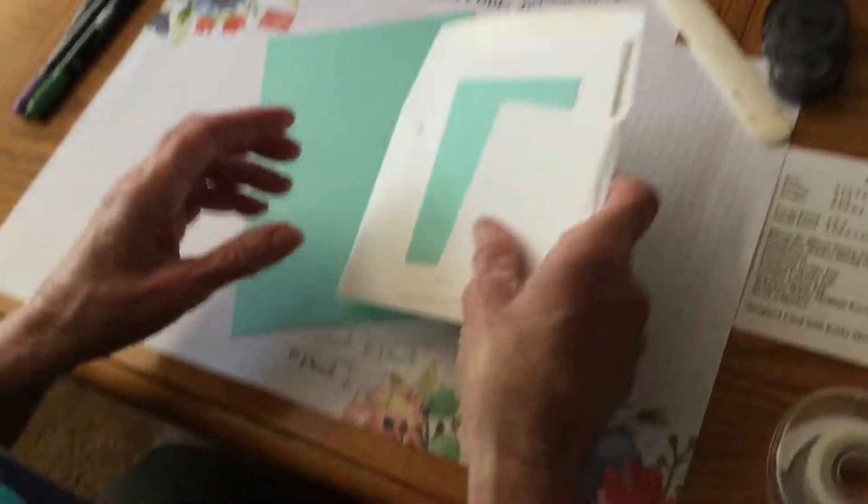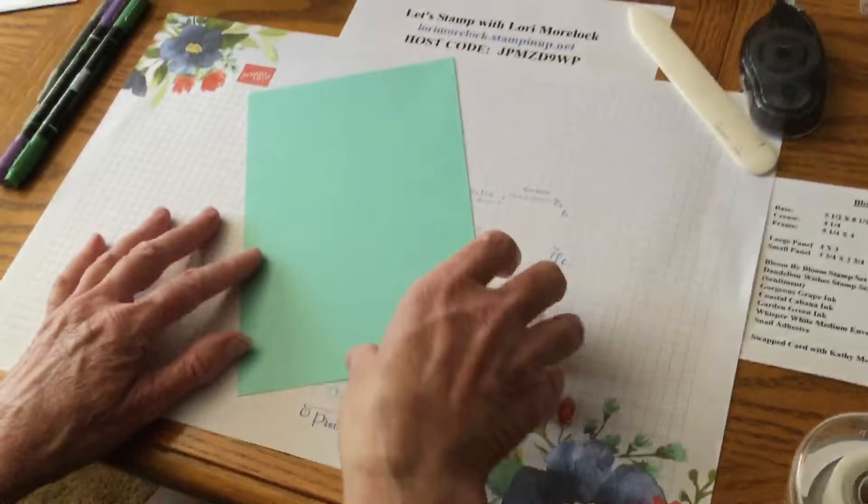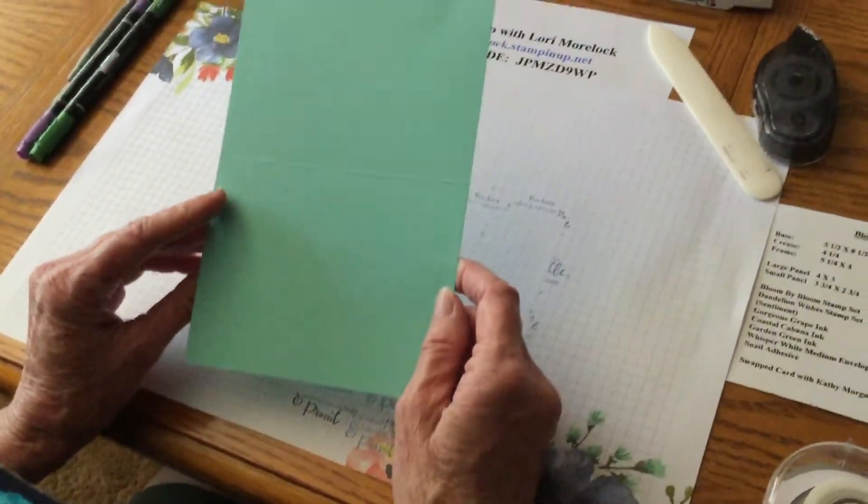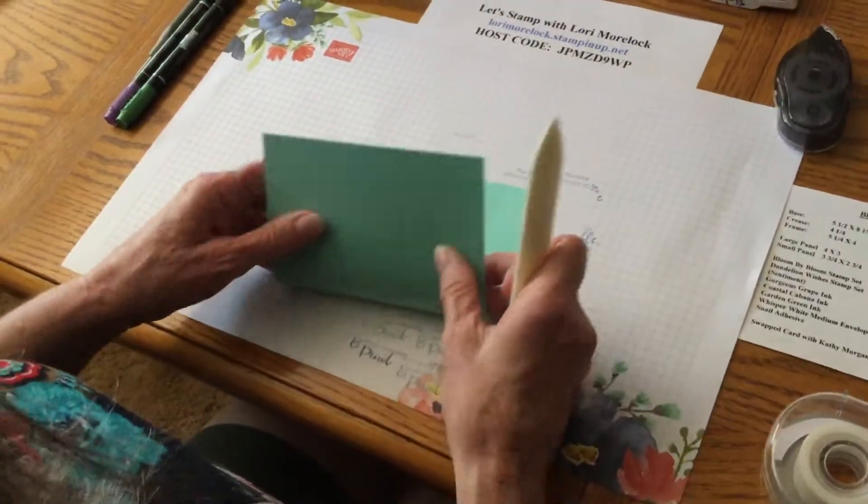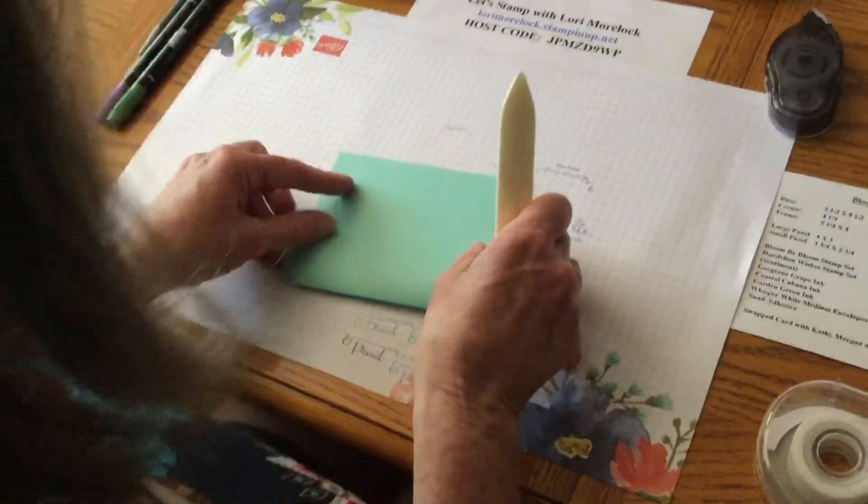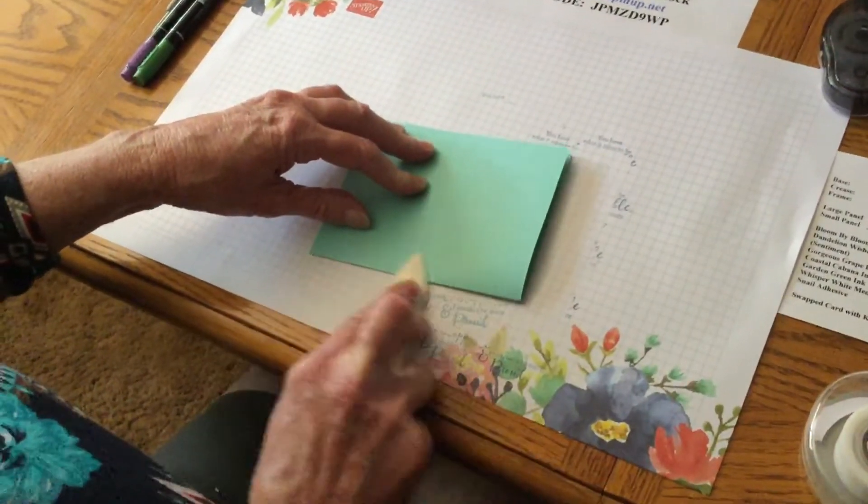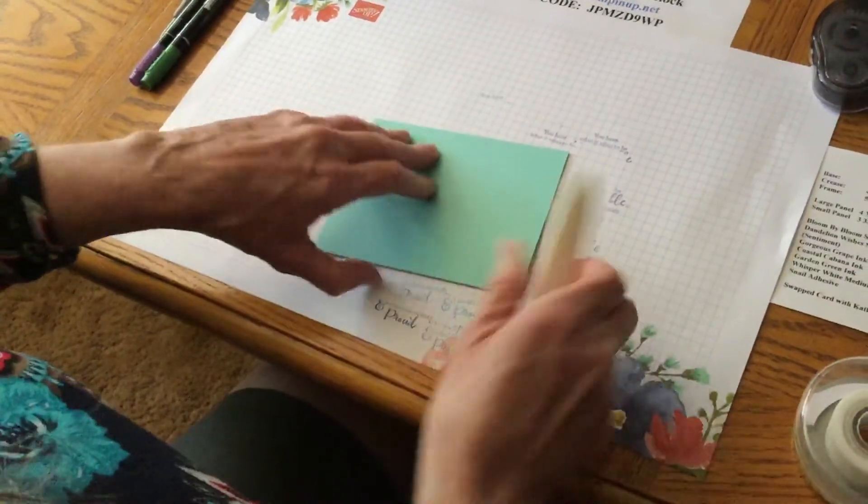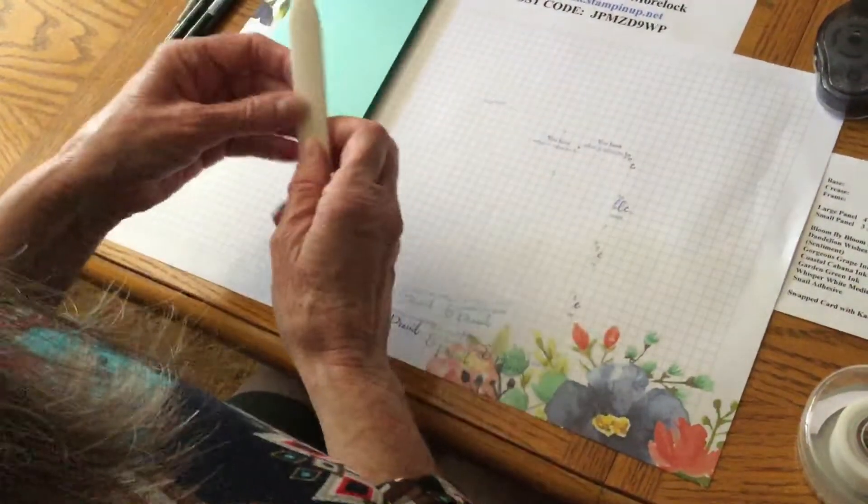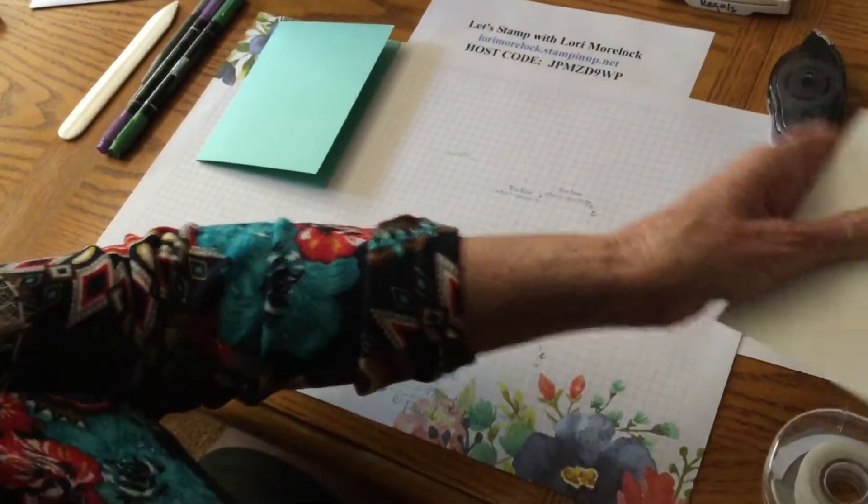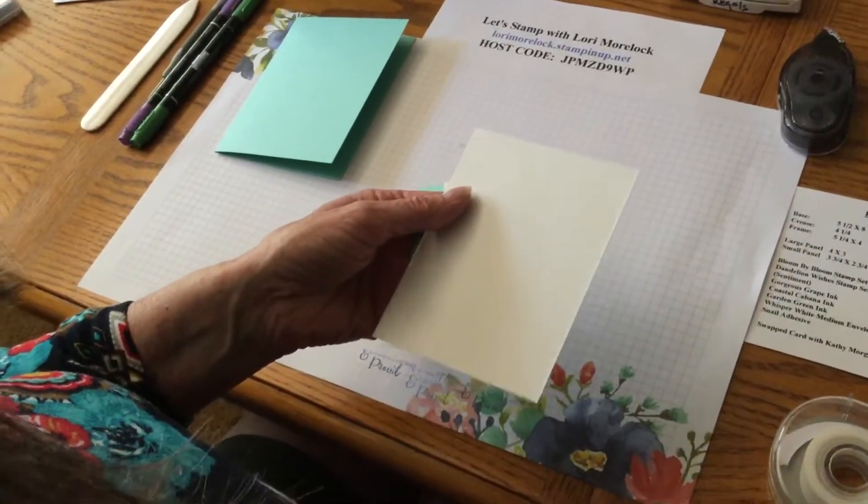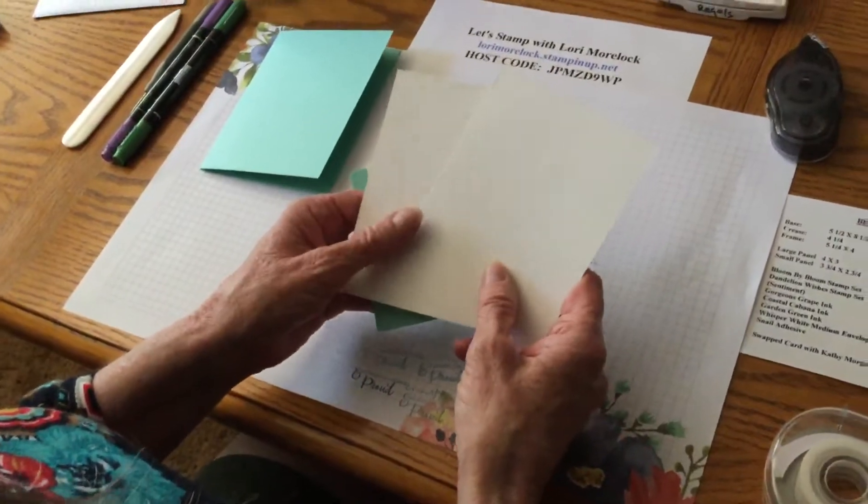So first we're going to use Coastal Cabana as our base, and I did 5 1/2 by 8 1/2. We'll go ahead and I creased it at 4 1/4, so we'll get that nice and creased. Now for the outside frame and the inside frame are both Whisper White, and I was 5 1/4 by 4.